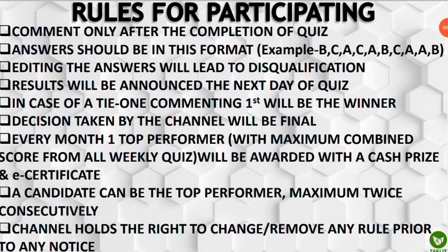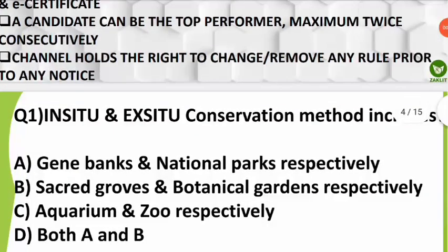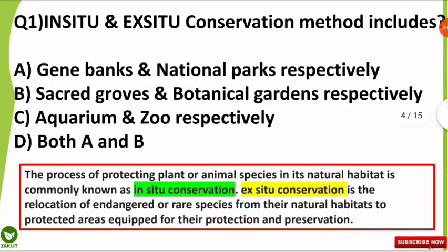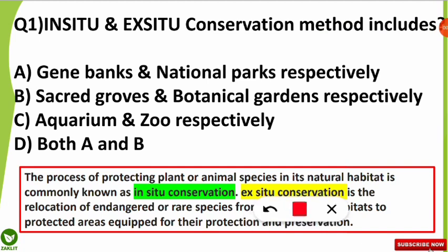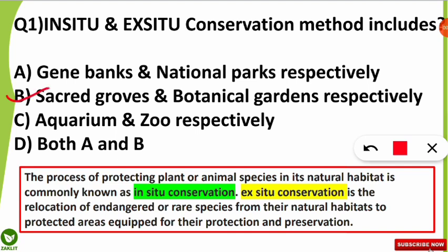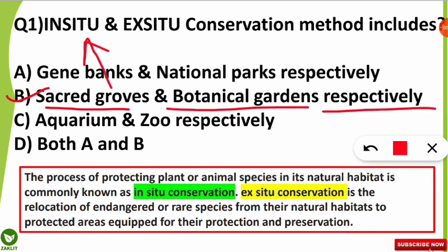Let's discuss the questions from 26th July 2021. The first question was: in situ and ex situ conservation methods include which of the following? Many of you were confused and gave the wrong option. The correct option is B — sacred groves and botanical gardens respectively. Sacred groves is an example of in situ conservation, and botanical garden is an example of ex situ conservation.